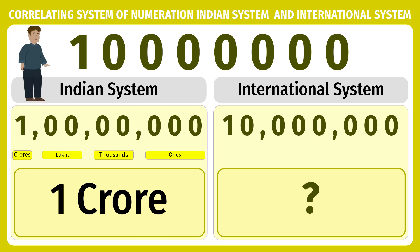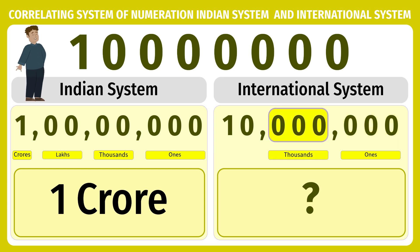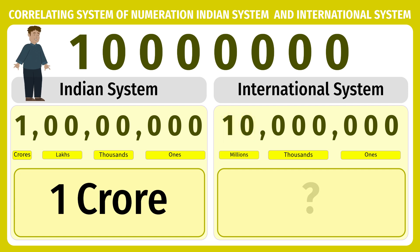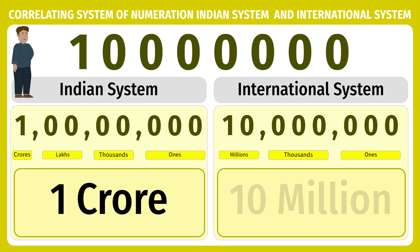To write it according to the international system of numeration, we write it with commas in three-three-three fashion. The periods are ones, then thousands, and then millions. So the number we have here is 10 million.